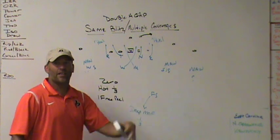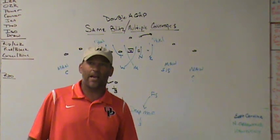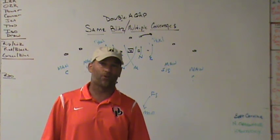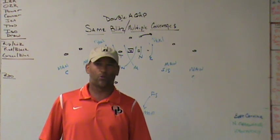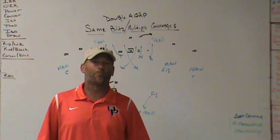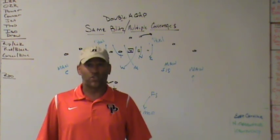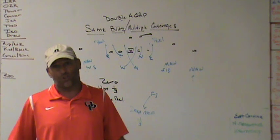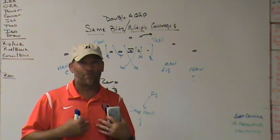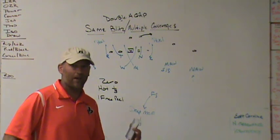Now when that team sees double crossfire on film, it's not always zero. So they've got to figure out: is it zero, hot thirds, or did the end just run with the back? You're running the same blitz, just tweaking the back end of it. So that's my version of how you can tweak blitzes by using the same paths and changing the coverage behind the blitz. You've given them double-A gap pressure with three looks behind it — zero, hot thirds, and man-free peel — making yourself multiple by using the same blitz.